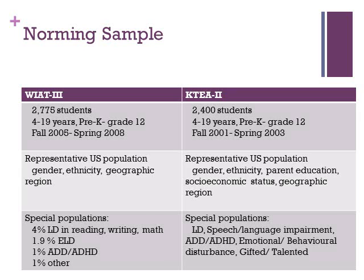The KT-2 is also a norm-referenced measure. The norming sample included 2,400 students from kindergarten to grade 12, drawn from a nationally representative group between 2001 and 2003 during the school year. In addition, the KT-2 can also be used as a criterion-referenced measure.